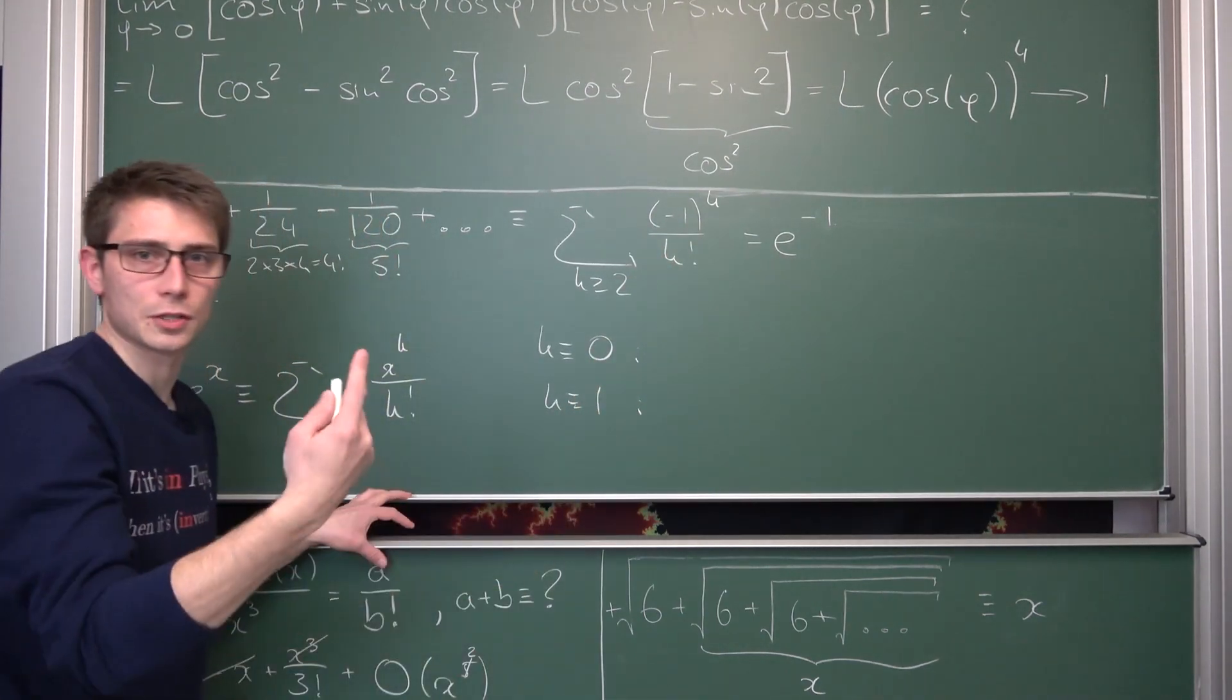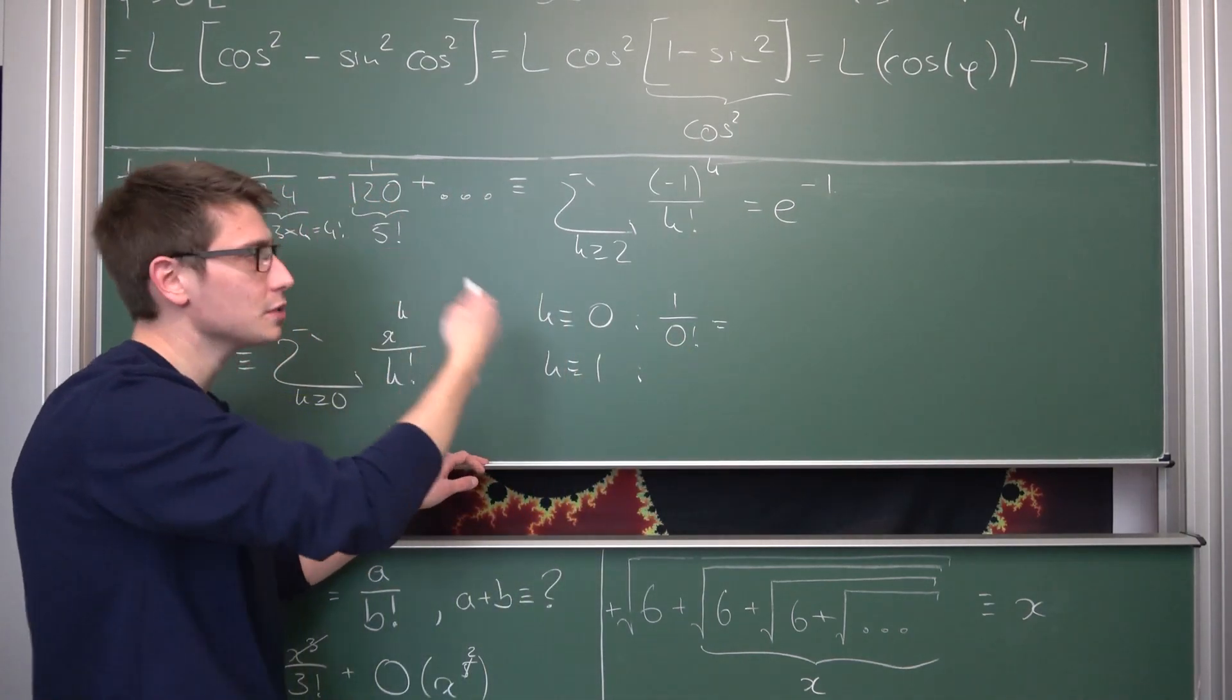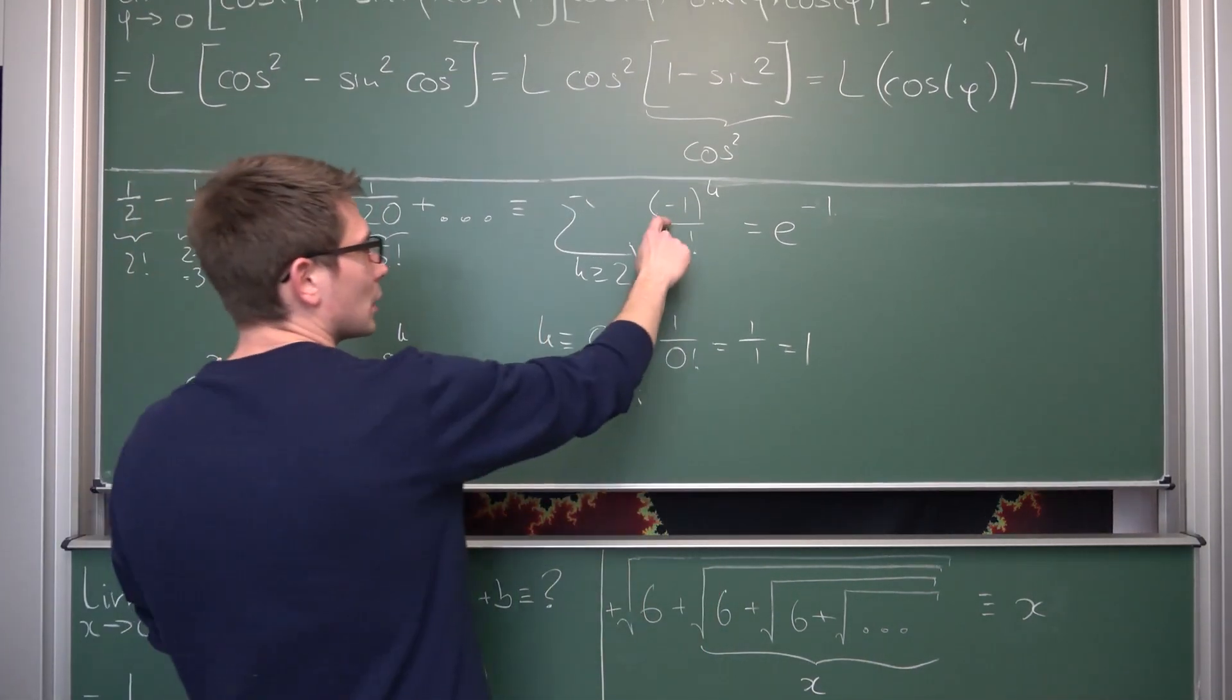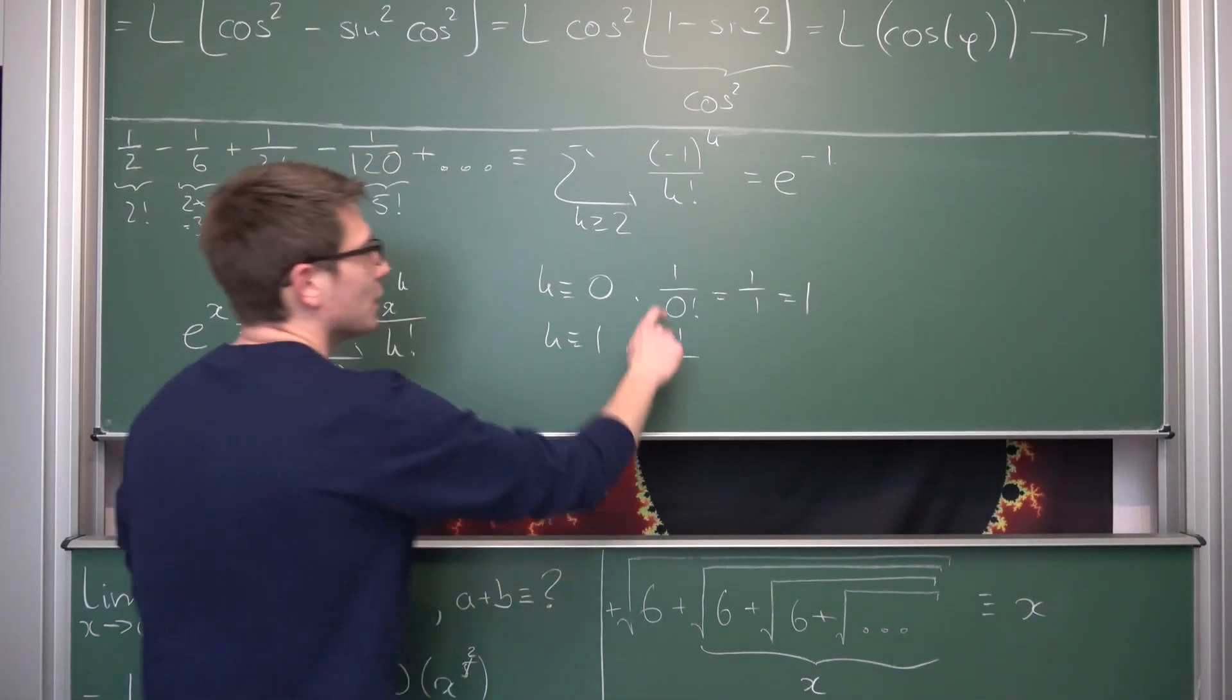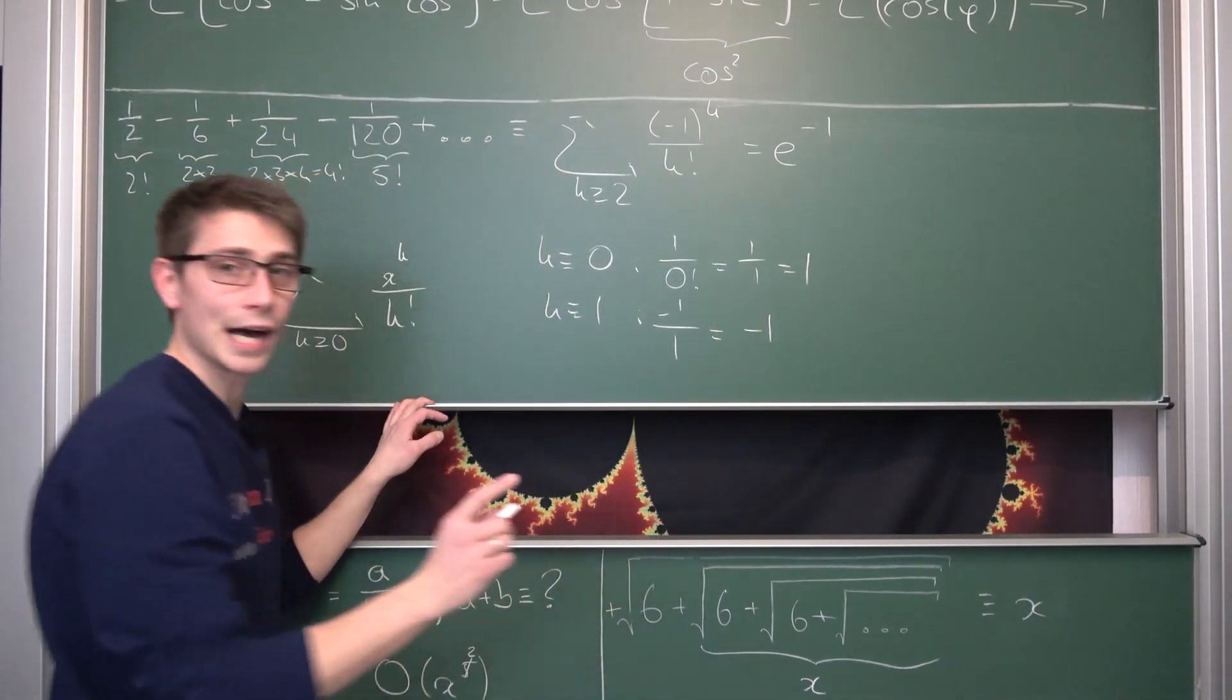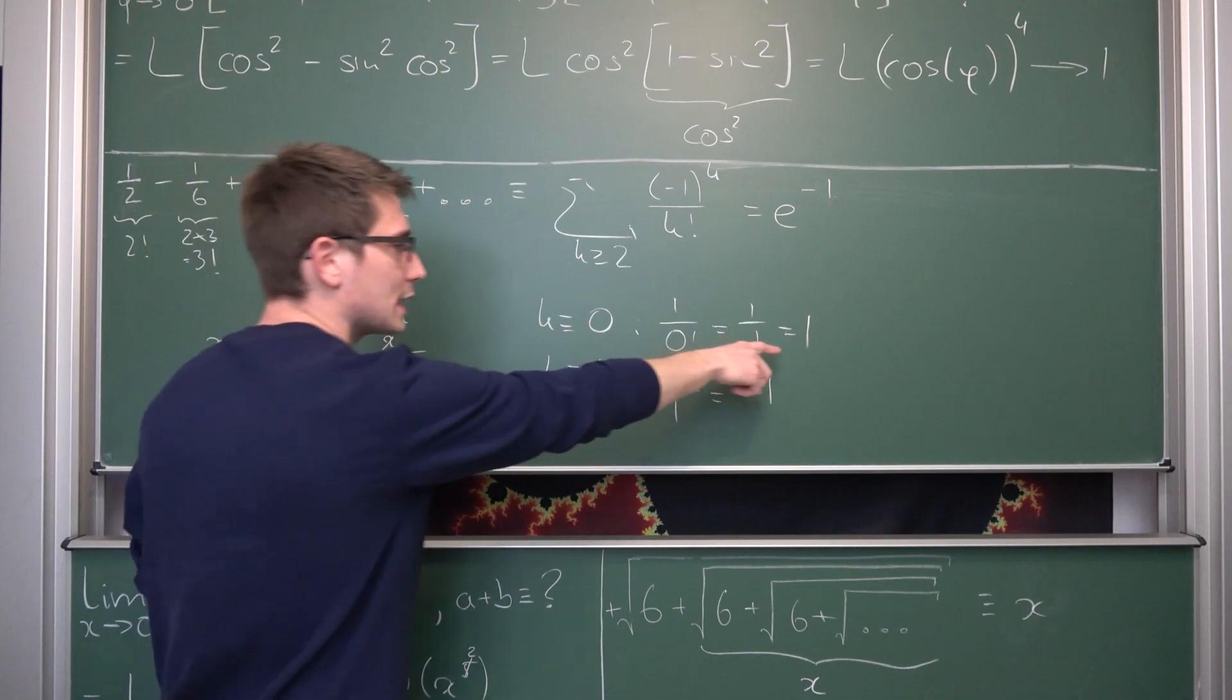If we plug zero into here, we are going to get negative one to the zero power is one, divided by zero factorial. Zero factorial by definition is going to turn into one. So one over one is nothing but one. What about k being equal to one? We're going to get negative one to the first power, which is negative one, divided by one factorial, which is one by definition. Negative one over one is going to turn into negative one. This is good, right? I mean, if we add up those two members, so the first two, we are going to get zero. And adding zero to an infinite series, which converges absolutely, is going to change nothing overall.